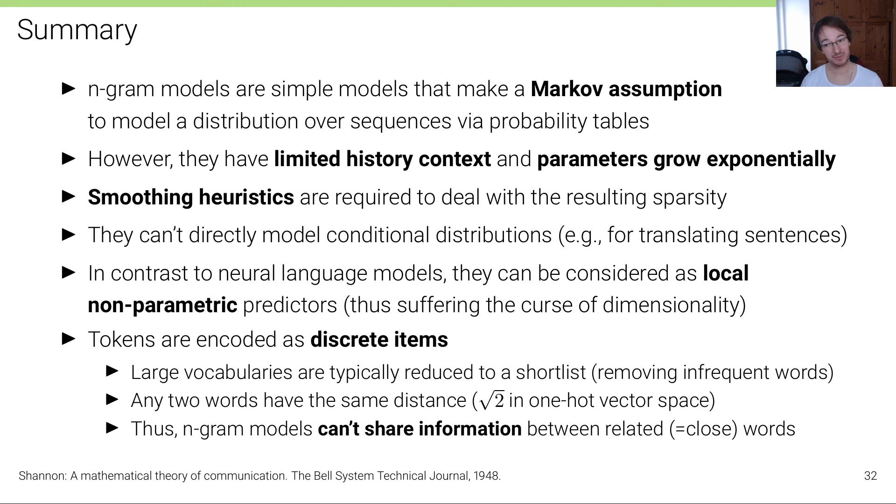They cannot directly model conditional distributions. This is just a generative language model, it's a model for the language, but it's not a model that's conditioned on an input sentence to produce an output sentence, which we'll see later. In contrast to neural language models, they can be considered somewhat as local non-parametric predictors, which is also where the curse of dimensionality comes in. We're not considering closeness of individual items but we're considering a local non-parametric predictor.